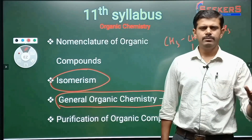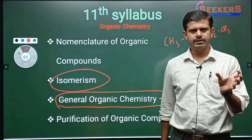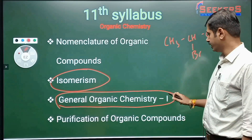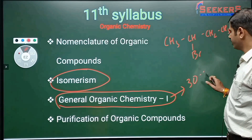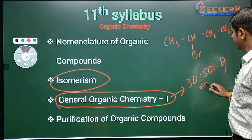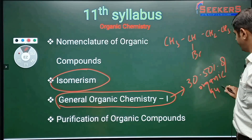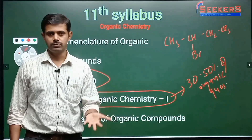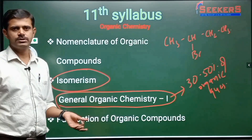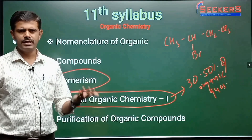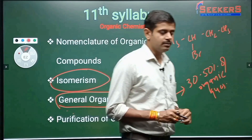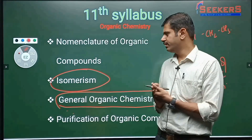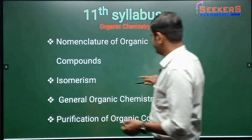Then we'll be moving to General Organic Chemistry (GOC) — the most important part. Out of 45 questions, approximately one-third each comes from physical, organic, and inorganic chemistry. In organic, 30 to 50 percent of questions are directly or indirectly connected with GOC. GOC studied in class 11 is used in every chapter of class 12. Also covered is purification of organic compounds — crystallization and other processes, and elemental percentage composition of hydrocarbons.